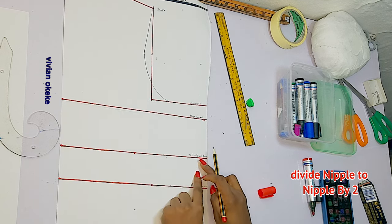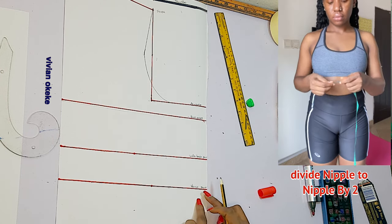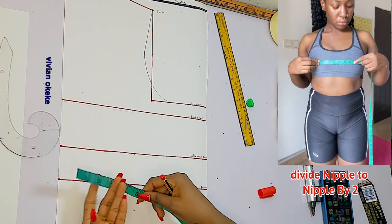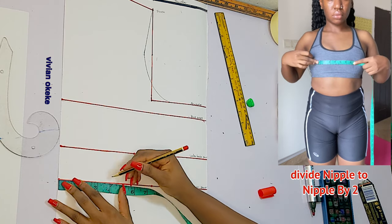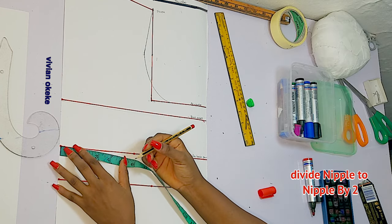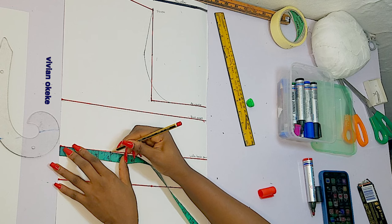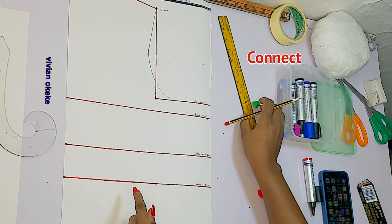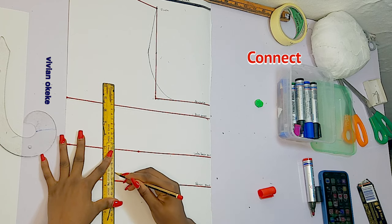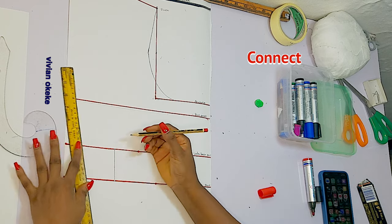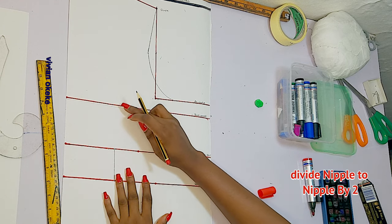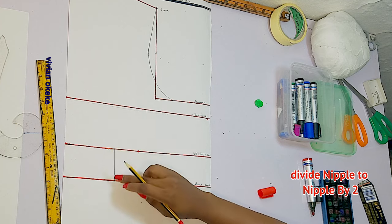The next thing is to mark the apex line. This is done by dividing the nipple-to-nipple measurement by two, then marking that measurement on the underbust line and the waist line. My nipple-to-nipple divided by two gives me four inches, so I mark four inches on the underbust and four inches on the waist, then connect both points with a straight line — this is the apex line.